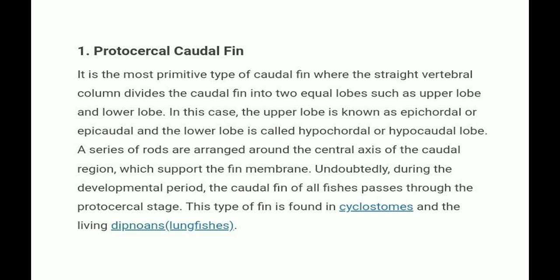The protocercal caudal fin is the most primitive type, where the straight vertebral column divides the caudal fin into two equal lobes: the upper lobe, known as the epicaudal lobe, and the lower lobe, called the hypocaudal lobe. A series of rods are arranged around the central axis of the caudal region to support the fin membrane.